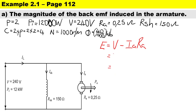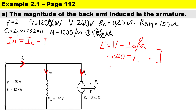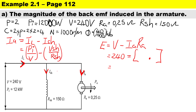We have the terminal voltage of 240 volts and the armature resistance, but we need to calculate the armature current. For a motor, I_a = I_L − I_shunt. Most of the supply current is drawn by the armature and a small amount flows through the shunt resistor. The line current is calculated as input power divided by voltage, and the shunt current is V_shunt divided by R_shunt. Since the shunt winding is connected in parallel, its voltage equals the terminal voltage.